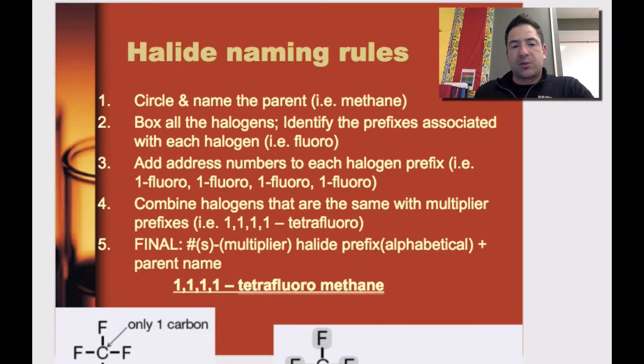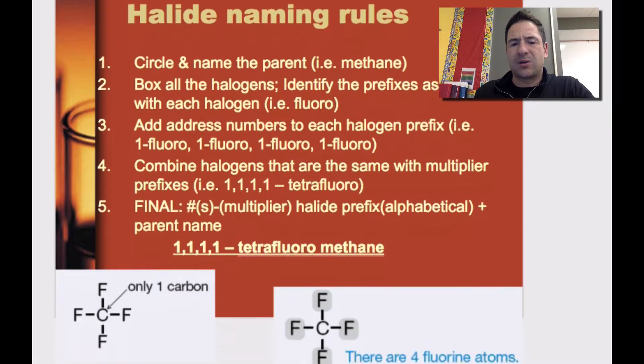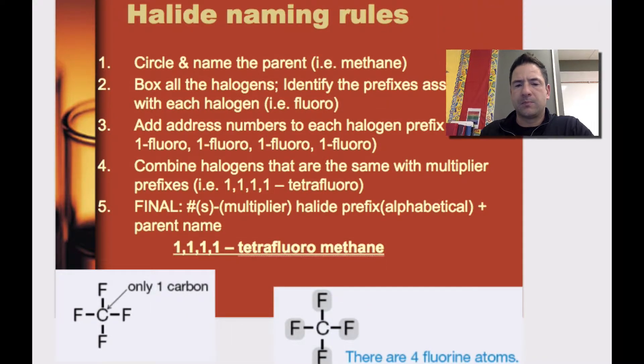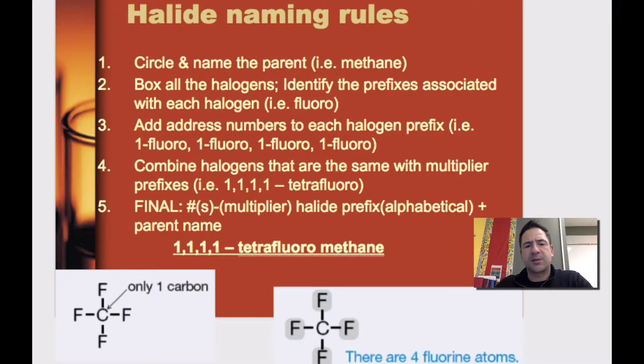Then what we're going to do is place a box around the halide, and the halogen that we find. So if it's an F, a Cl, a Br, or an I, we're going to put a box around it. If there's more than one, we'll box each single one.